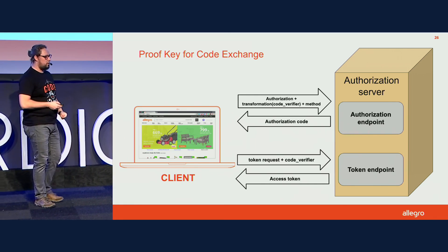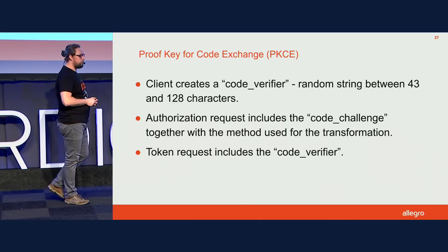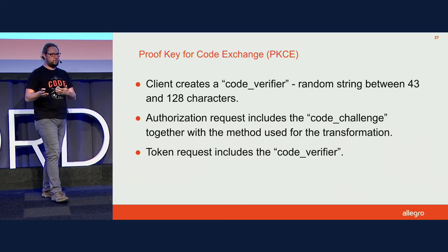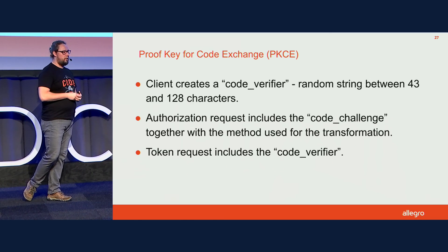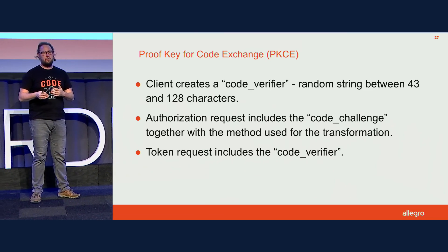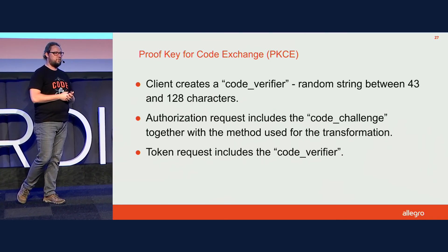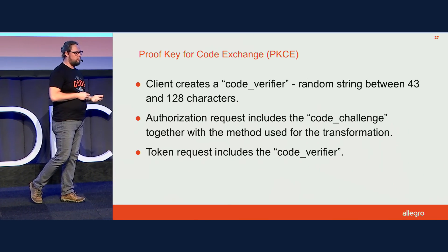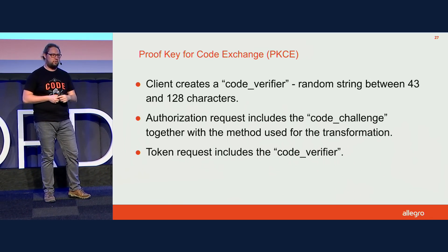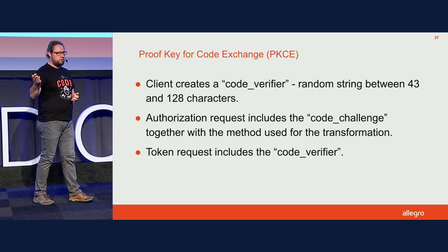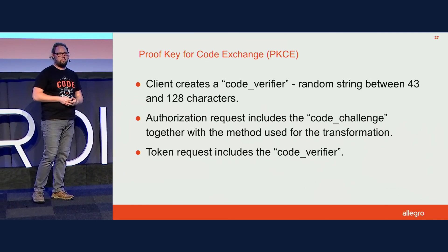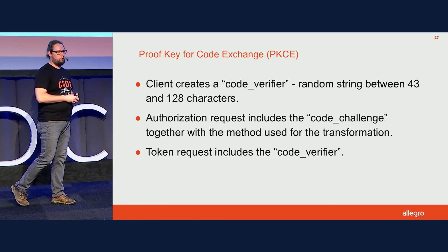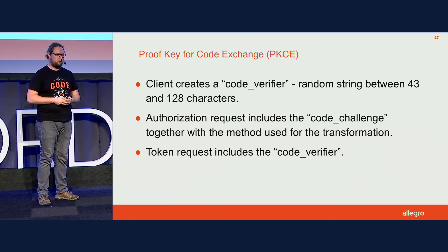You should use PKCE for single page applications and mobile apps. The code verifier is a random string between 43 and 128 characters. The transformation, called the code challenge, should be the code verifier transformed with SHA-256; if your device can't do SHA-256, you can send it as plain text. So the method is either SHA-256 or plain. You send the code challenge and method to the authorization server, and with the token request include the original code verifier. The server transforms it using SHA-256 and checks if it matches, then issues the access token.